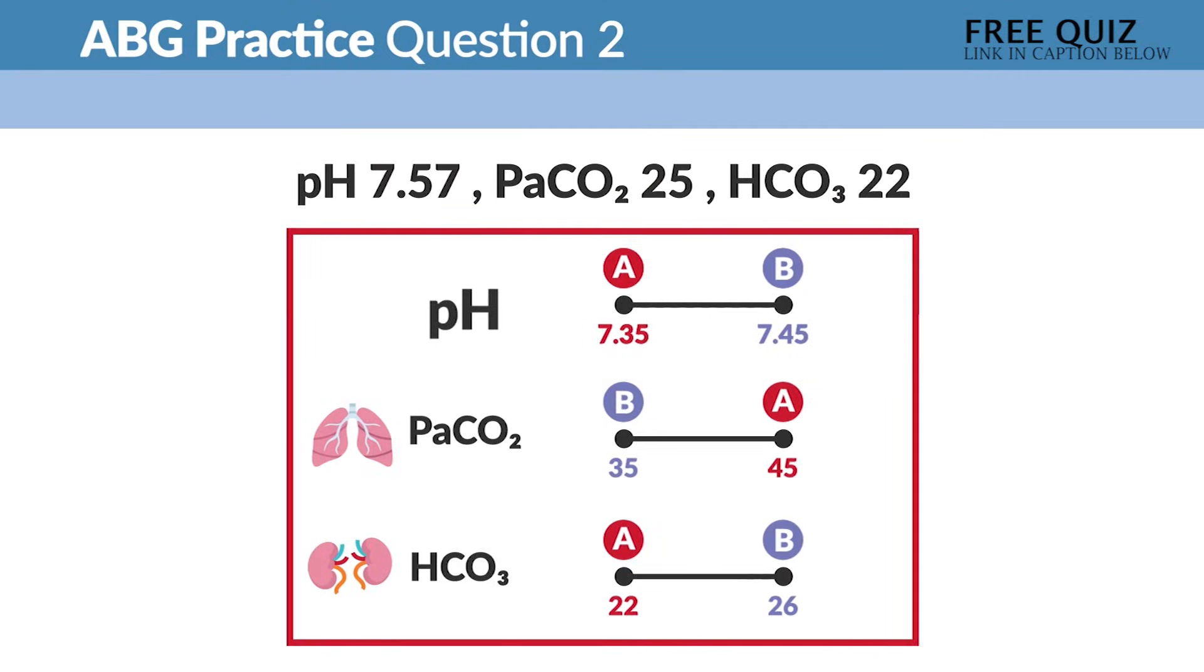So the correct answer is respiratory acidosis that is uncompensated. Now for our next question, ABG practice question number two: we have a pH of 7.57, a PaCO2 of 25, and HCO3 of 22.